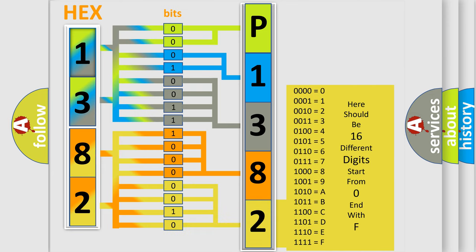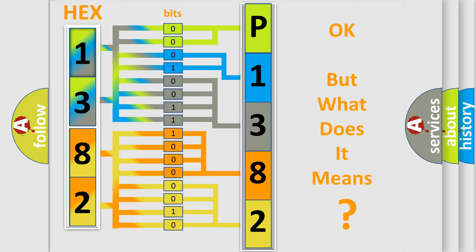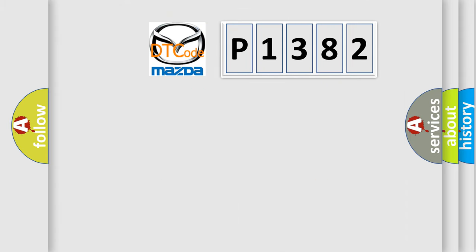We now know in what way the diagnostic tool translates the received information into a more comprehensible format. The number itself does not make sense to us if we cannot assign information about what it actually expresses. So, what does the diagnostic trouble code E1382 interpret specifically for Mazda car manufacturers?